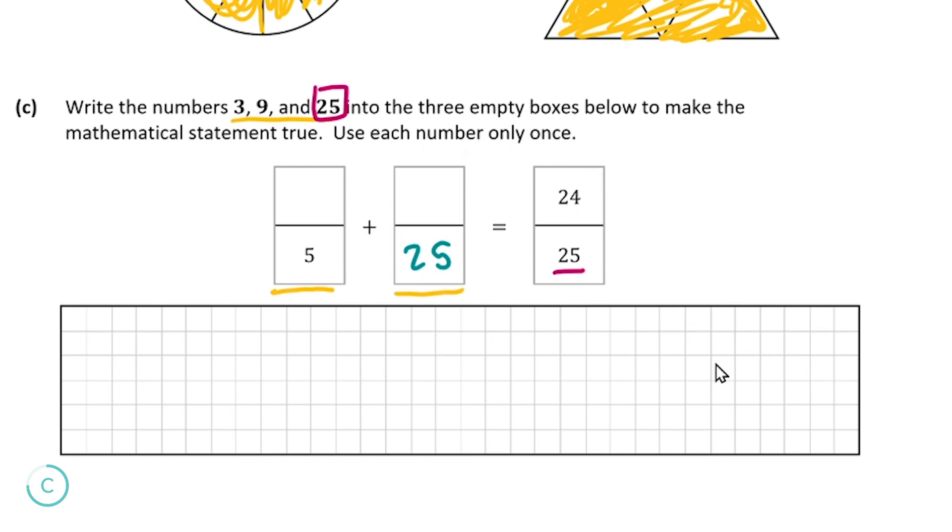So if we filled nine into this first box, so we had nine over five, nine is bigger than five and so that will be greater than one, and obviously we cannot have that. So by default we have to have three in this first box here, and then of course our last number left is nine, so we'll have nine in this box here.